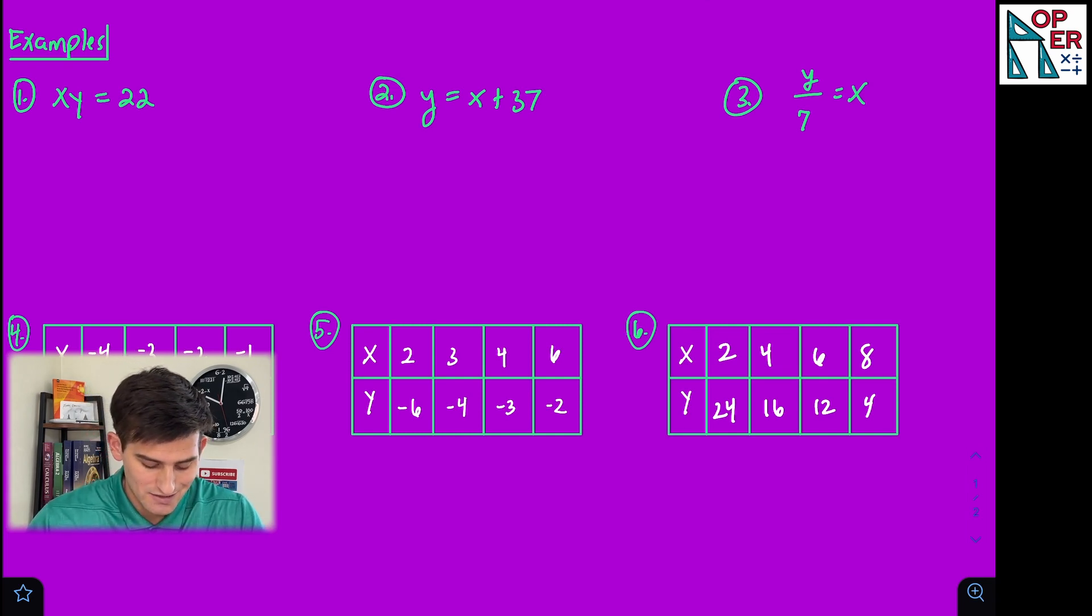Number one, we have x times y equals 22. I can divide both sides by x, and that gives me y equals 22 divided by x. Now I notice that x is in my denominator, so this is an example of indirect variation.